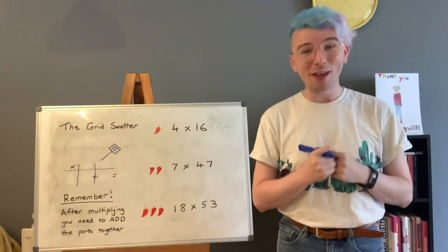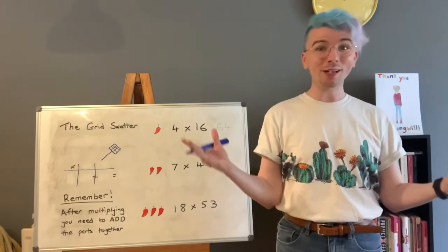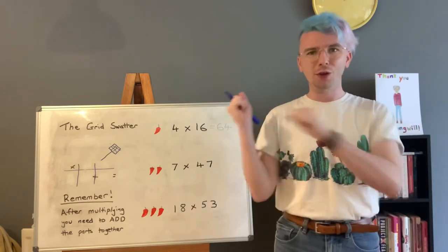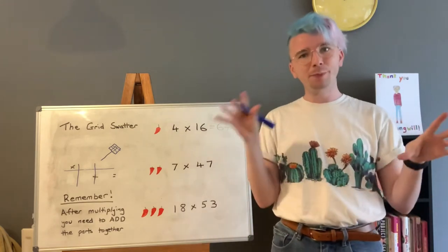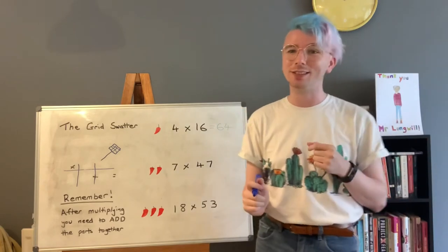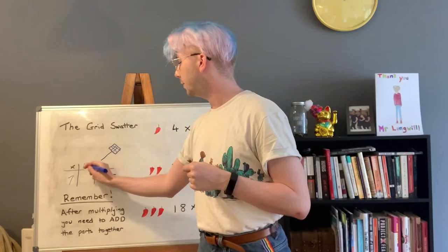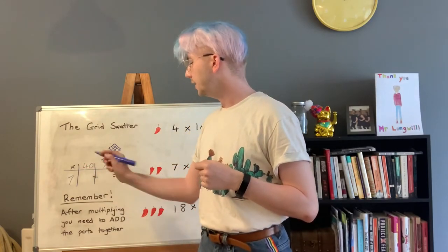Thank you very much mild solution Grant. Here is your medium solution. So we are tackling the problem 7 times 47. With our grid swatter how would we split that sum up in our heads? Well I would do 7 times 40 and 7 times 7.